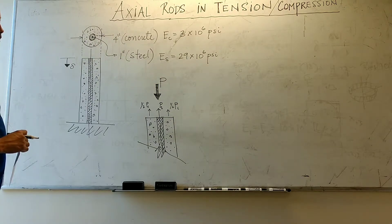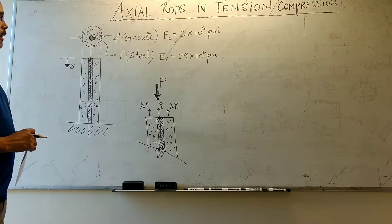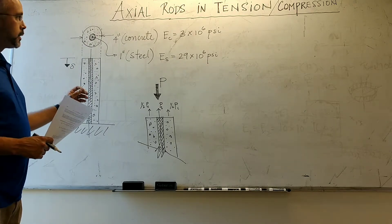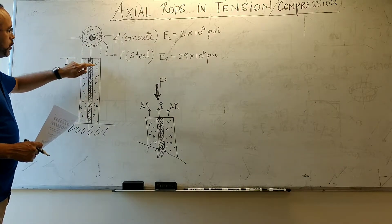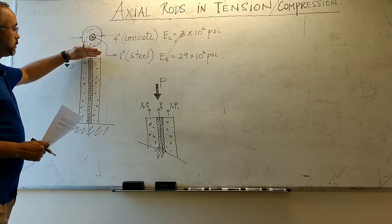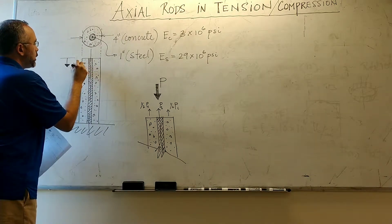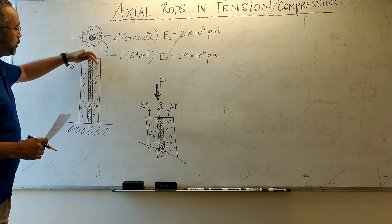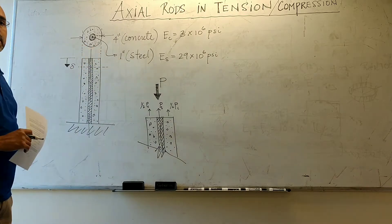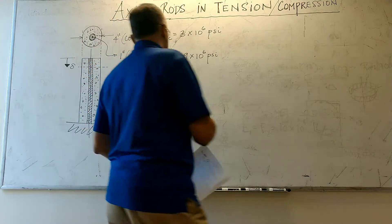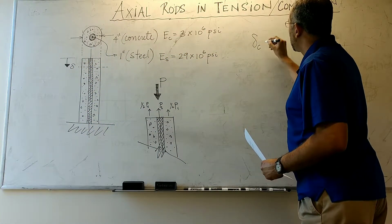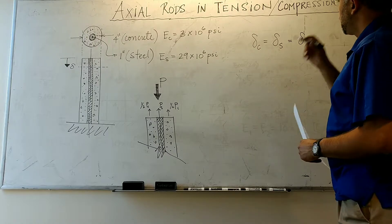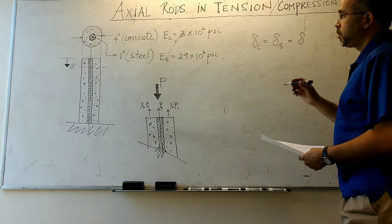First, we apply the fundamental principle of compatibility. Because both materials are in parallel, they both deform the same amount — when this plane moves down due to the load, both the concrete and the steel deform equally. So we can say: deformation in concrete equals deformation in steel equals the total deformation.